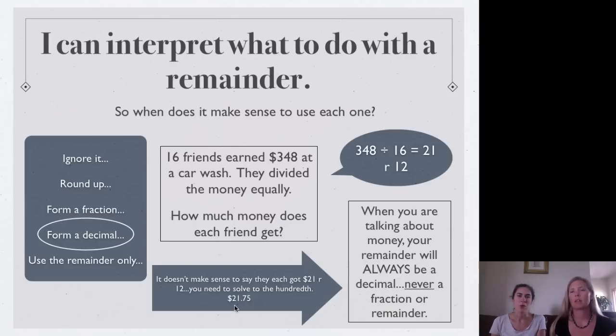Yeah, we go to hundredths because that's what we talk about with money. Yeah. So, we would have $21.75, not a remainder of 12. So, just be really, really careful with that. I'm sure we'll have more to practice later. So, don't worry.